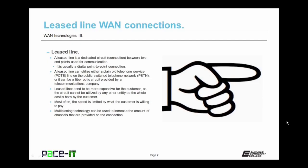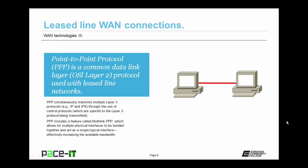In IT, a leased line is usually a digital point-to-point connection. A leased line can utilize either a plain old telephone service line — a POTS line on the public switched telephone network — or it can be a fiber optic circuit provided by a telecommunications company. Leased lines tend to be more expensive for the customer, as the circuit can't be utilized by any other entity — the whole cost is borne by the customer because they're the only ones who get to use it. Most often the speed of a leased line is limited by what the customer is willing to pay.